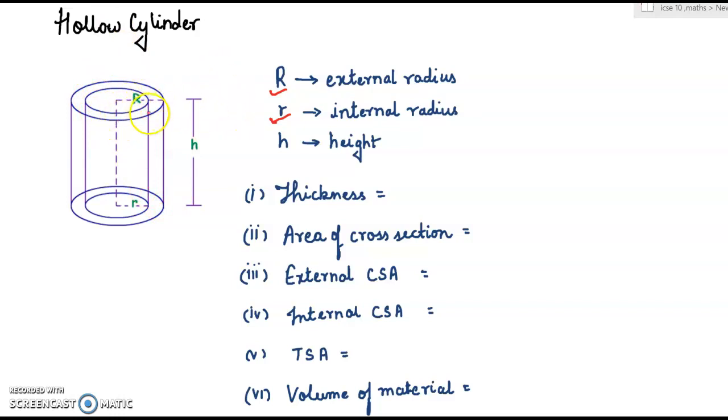Now thickness of cylinder will be, see this is R and this portion is r for the inner cylinder. So thickness will be this part, that means capital R minus small r. Then area of cross section, that will be π(R² - r²).